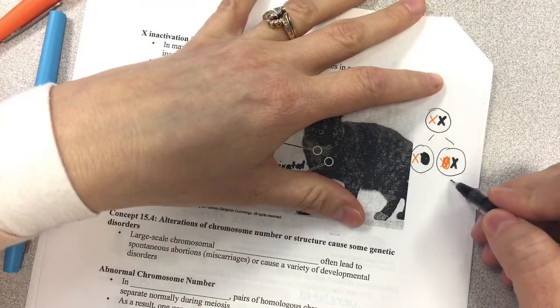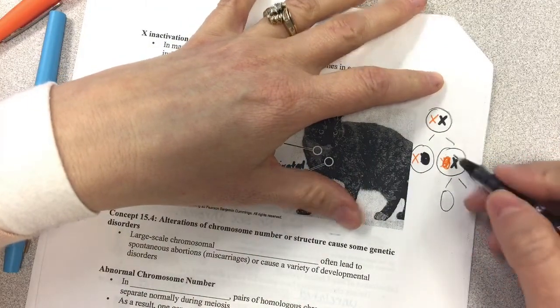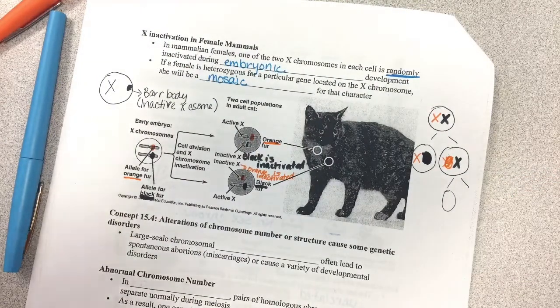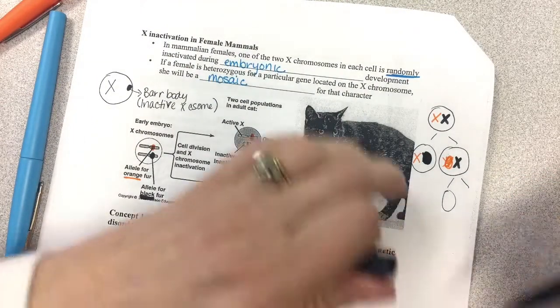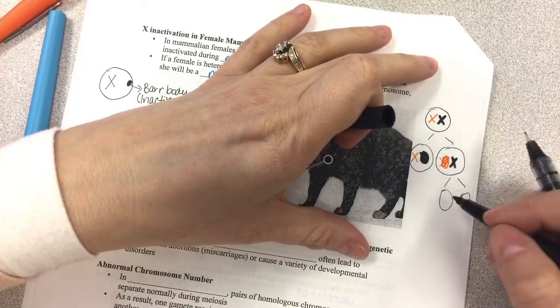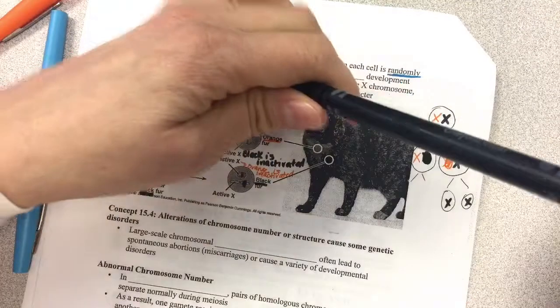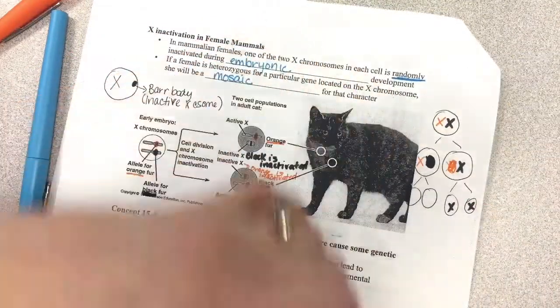So then what happens is, every cell beyond that is only going to have the activated black chromosome, and every cell that's made from this one will have the activated orange.